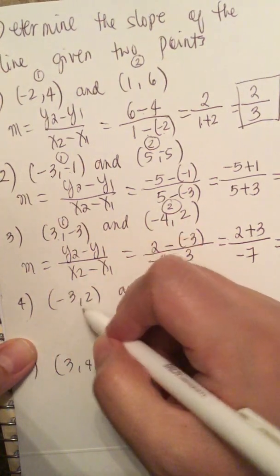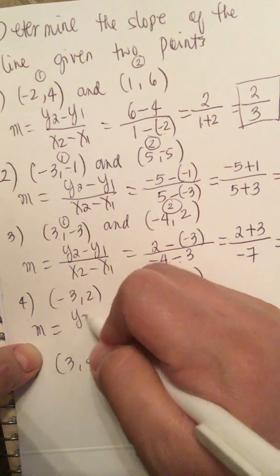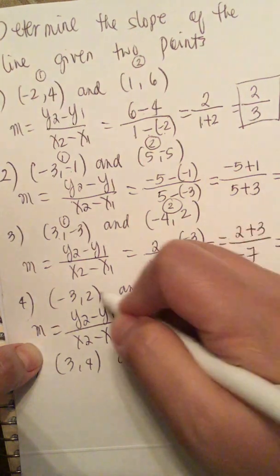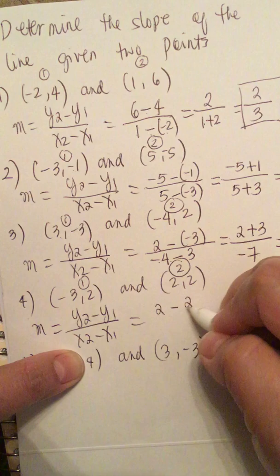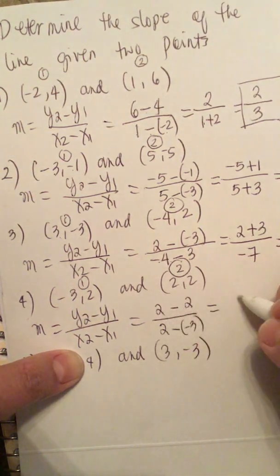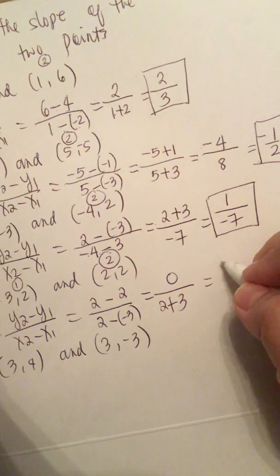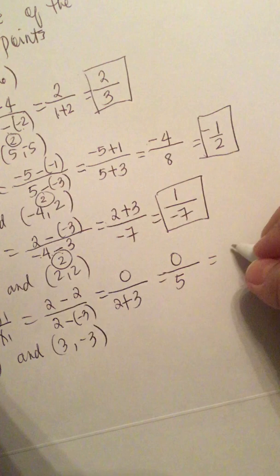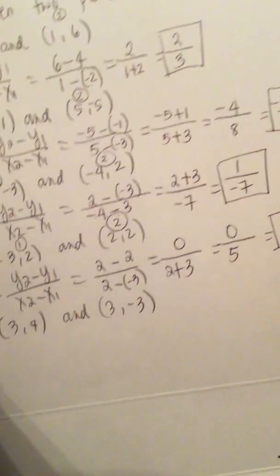Now we have (-3, 2) and (2, 2). So m equals y2 minus y1 over x2 minus x1. Labeling them as point 1 and point 2, we get 2 minus 2 over 2 minus (-3), which is 0 over 2 plus 3, giving 0 over 5. And 0 over anything is 0, so the slope is 0. This is a horizontal line.